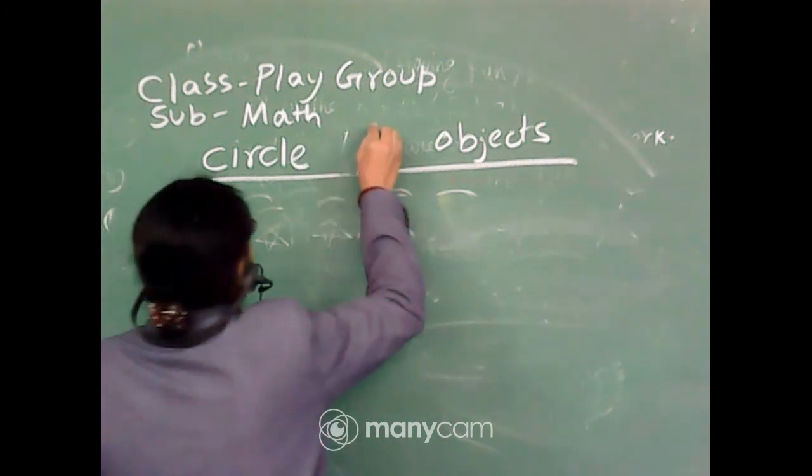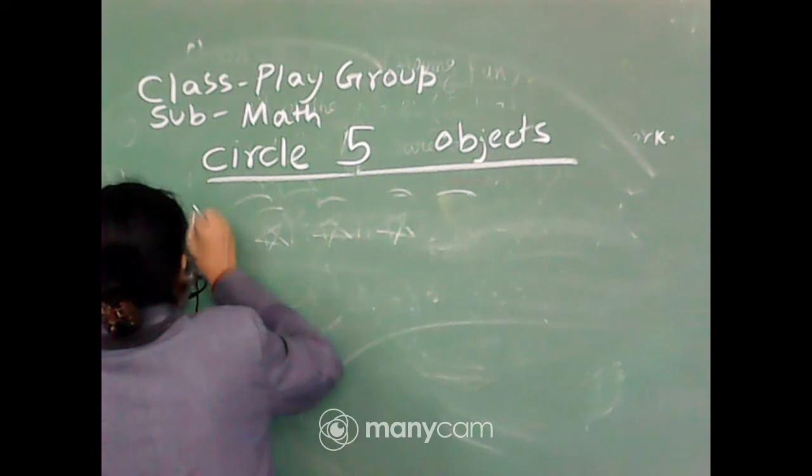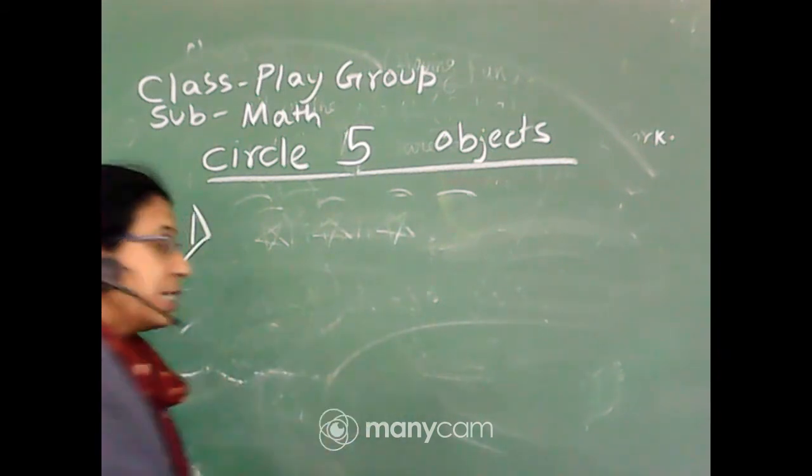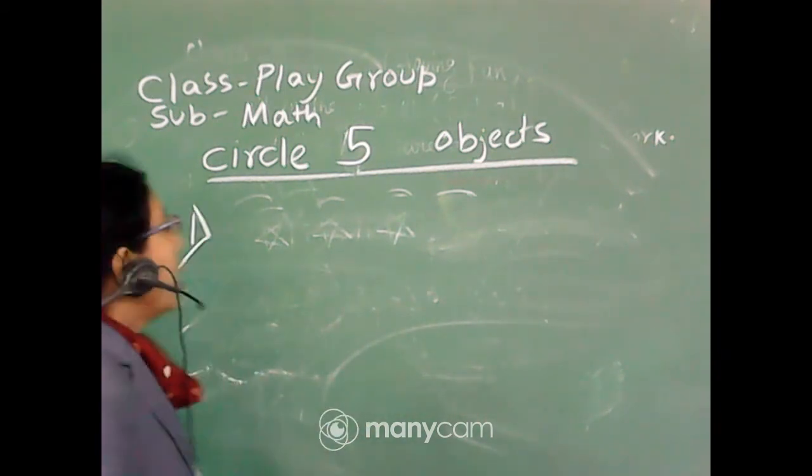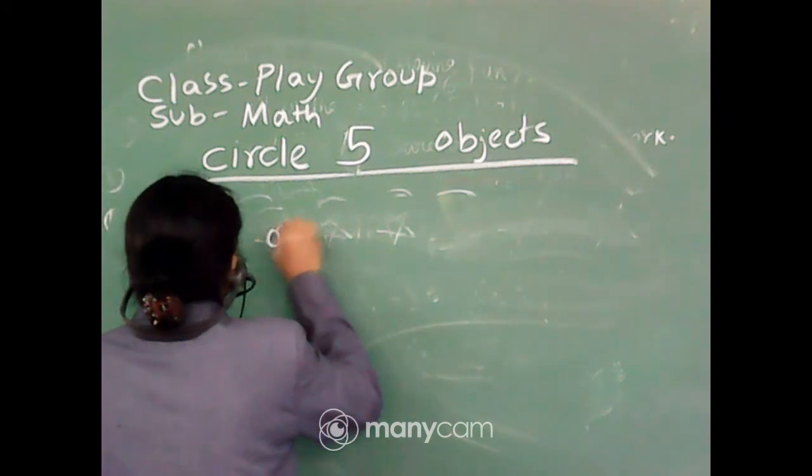Now circle five objects. Same thing. Now we are drawing flowers.